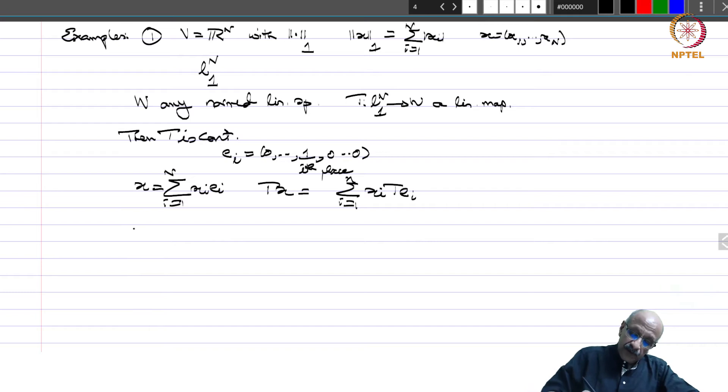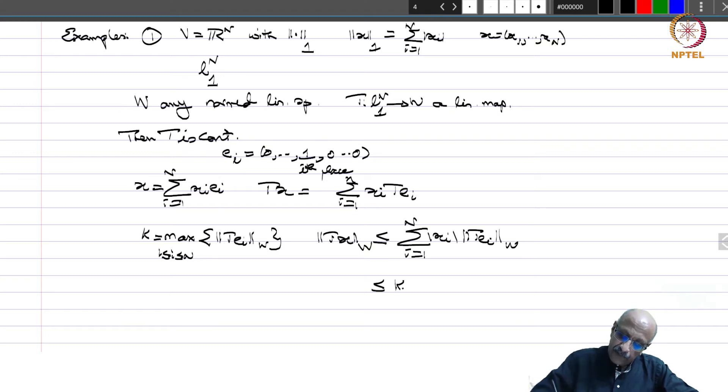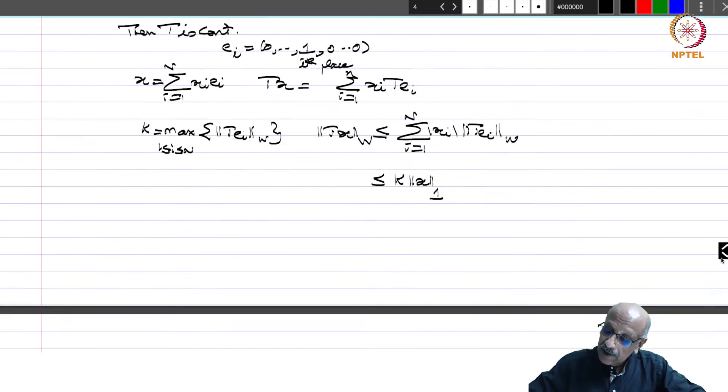Now let us take k to be the max of norm T E_i in W, 1 less than equal to i less than equal to n. Now by the triangle inequality, you get norm Tx in W is less than or equal to sigma i equals 1 to n mod x_i norm T E_i in W, which is less than equal to k times sigma mod x_i, which is nothing but norm x_1. And therefore, by the definition of continuity, T is a continuous map.